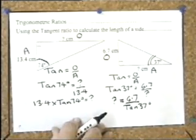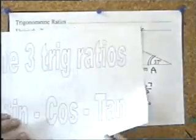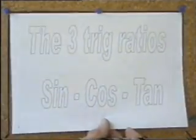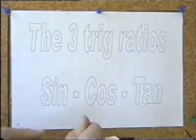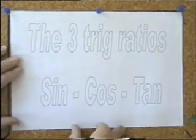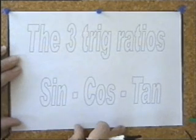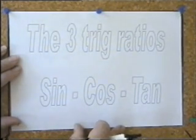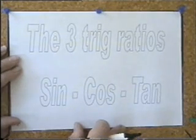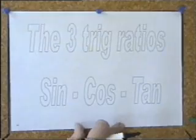When you're asked a question in the exam, you won't be told it's trig ratios and you won't be told whether it's sine, cosine, or tangent. You've got to figure out whether it's trig ratios to start with, whether it's Pythagoras, and if it is trig, which of sine, cosine, or tangent to use.